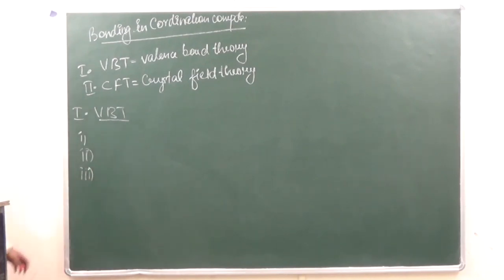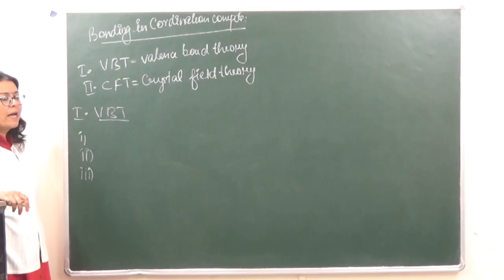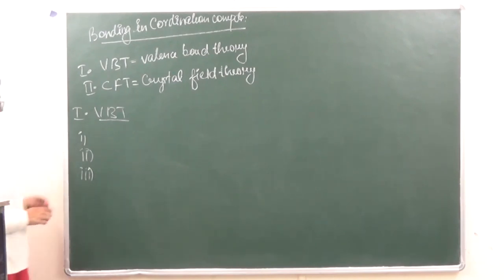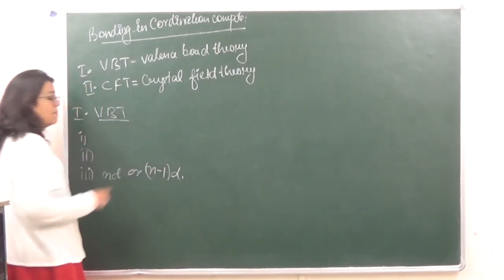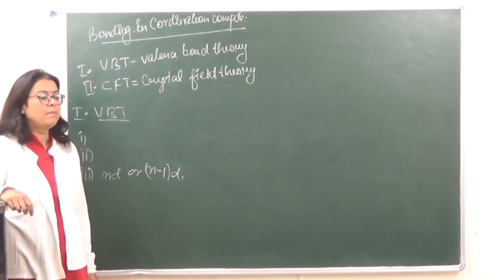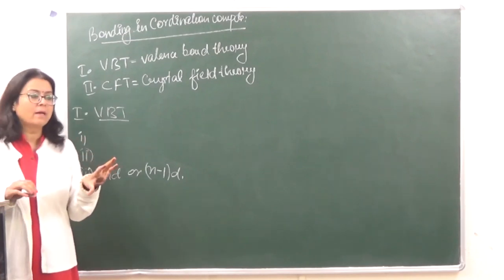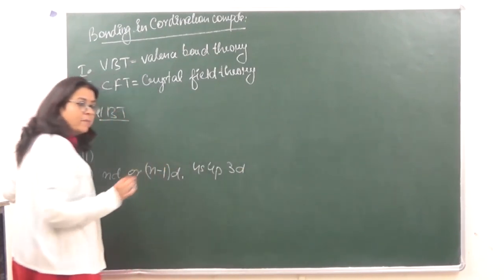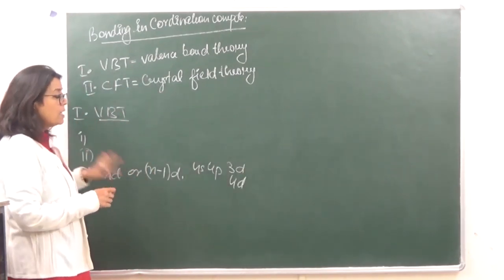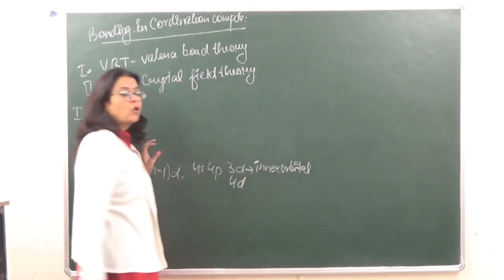The third postulate: the d orbitals available for hybridization may be either nd (outer d) or (n-1)d (inner d). If the 3d orbitals participate in hybridization, it is called an inner orbital complex.